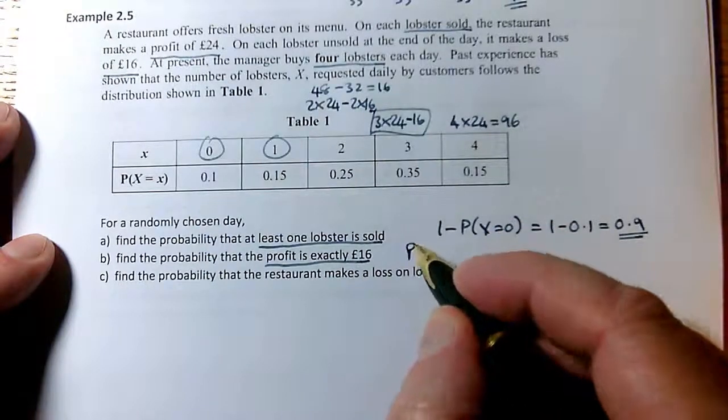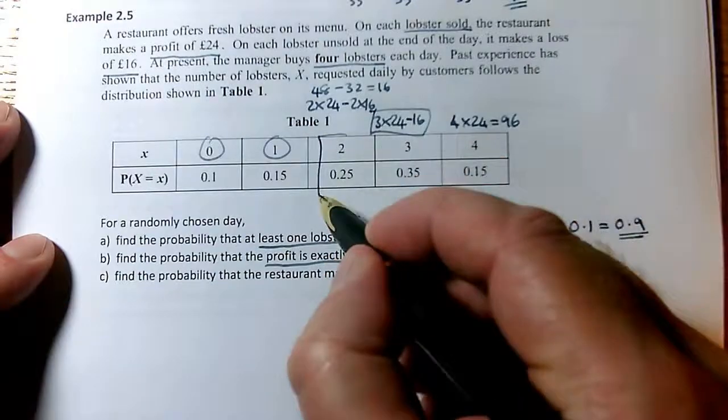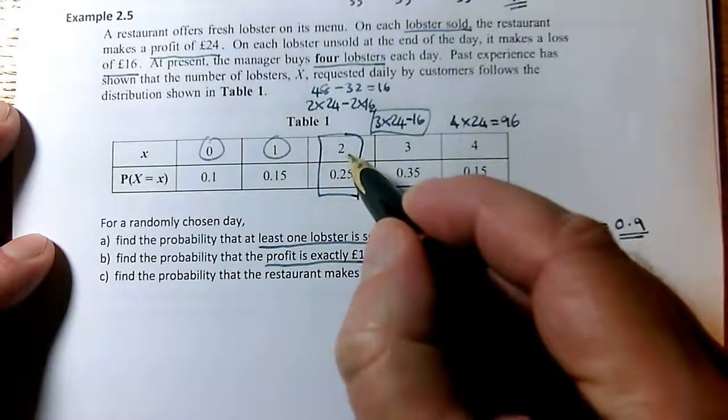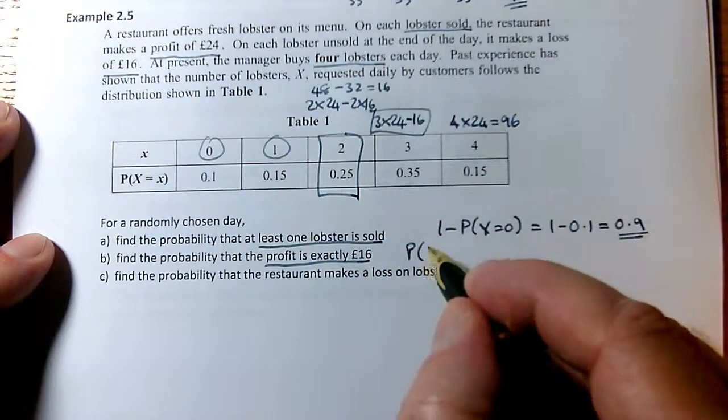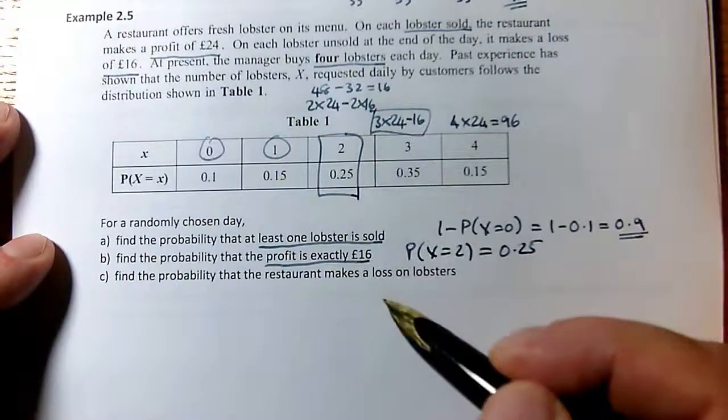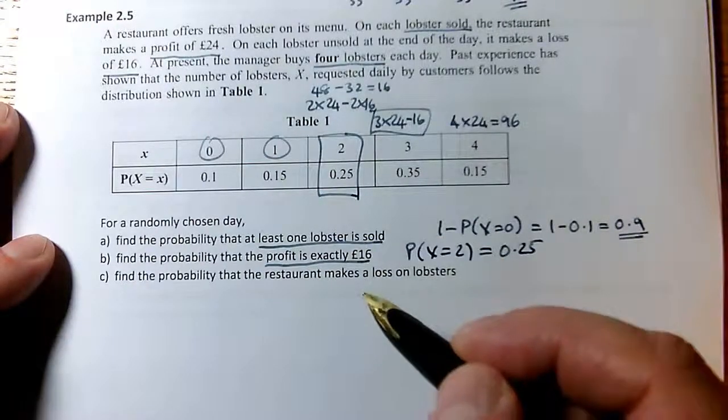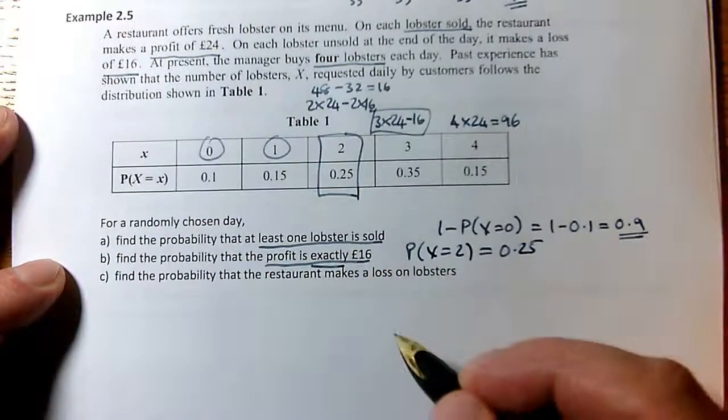So therefore, what I really want is just a complicated way of asking me, what is the probability that I sell two lobsters? Because when I sell two, I make a profit of 16. So the probability that x equals two is just 0.25. It ends up just writing down the correct probability from the table, because it's exactly £16, not more than or less than.